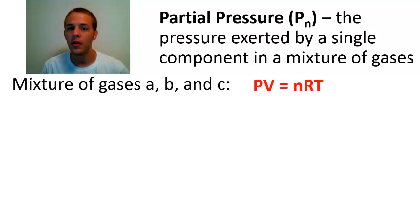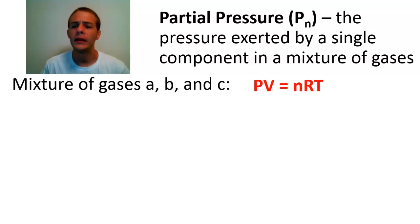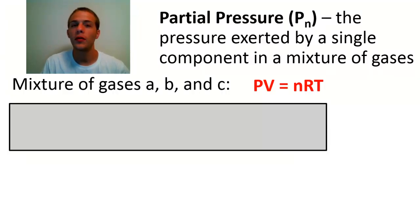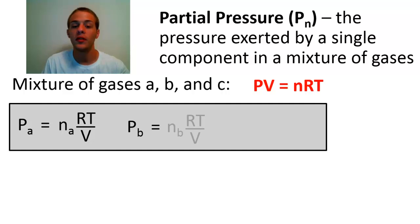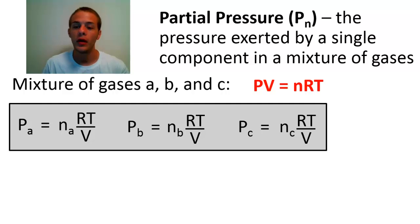If we have a mixture of gases A, B, and C and apply the ideal gas law — pV = nRT — to get an expression for the partial pressure of each gas, we solve for pressure by dividing both sides by volume. The partial pressure of gas A is the amount of A in moles times RT over V; similarly for gas B, it's moles of B times RT over V; and for gas C, it's moles of C times RT over V.